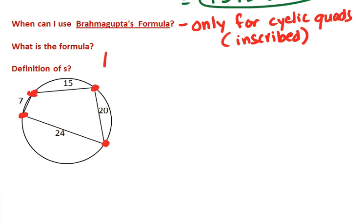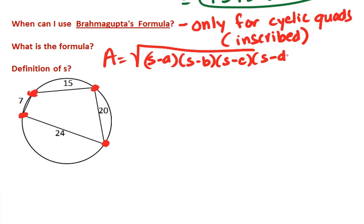What is the formula? It looks a lot like Hero's formula. We still have four factors, but we've got four sides this time, so S never stands alone. We start taking S minus each of the sides.